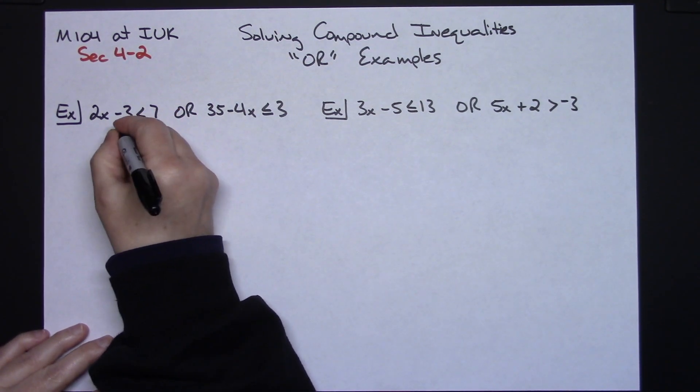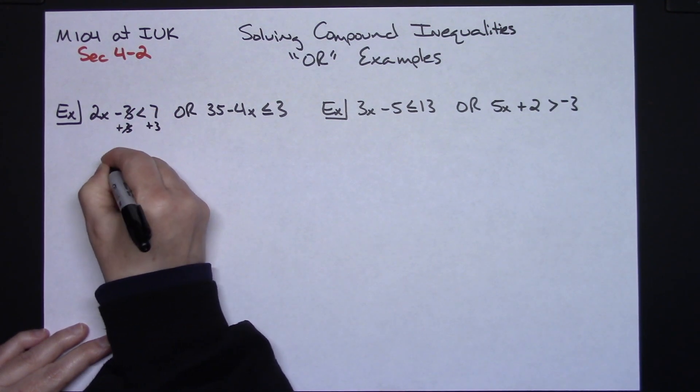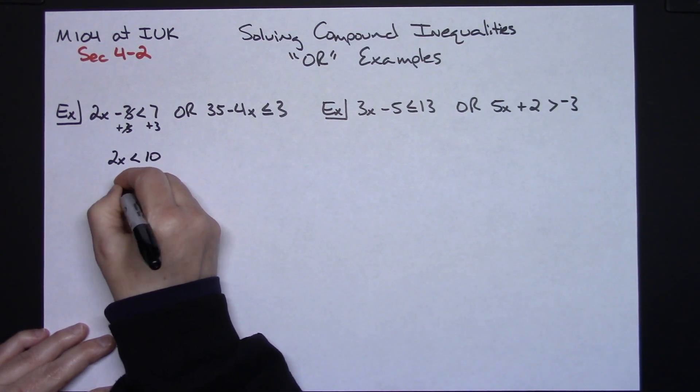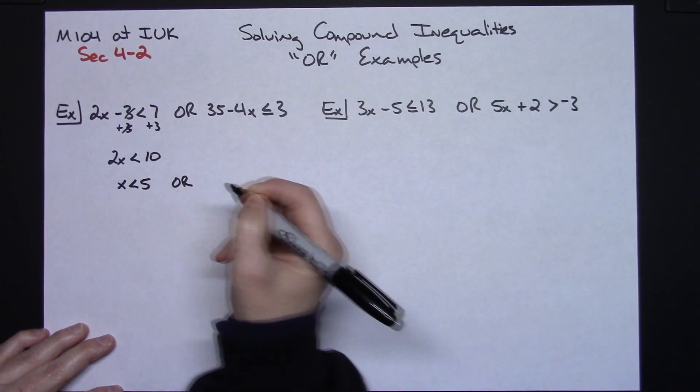So algebraically, let's go ahead and solve this. We're going to add 3 to both sides. We'll have 2x is less than 10. Dividing both sides by 2, we'll have x is less than 5. I'm going to go ahead and put the word OR down there.